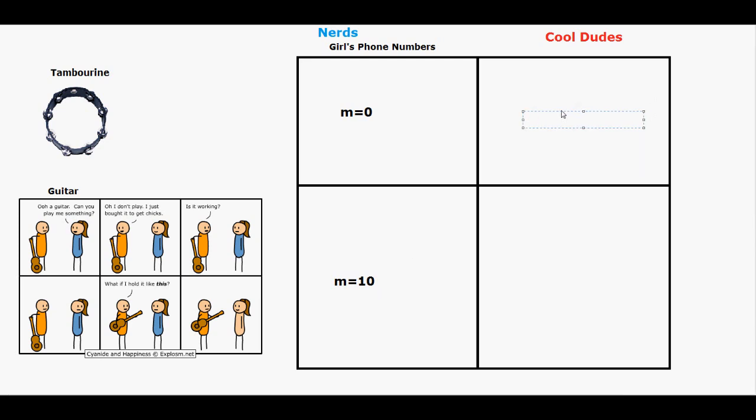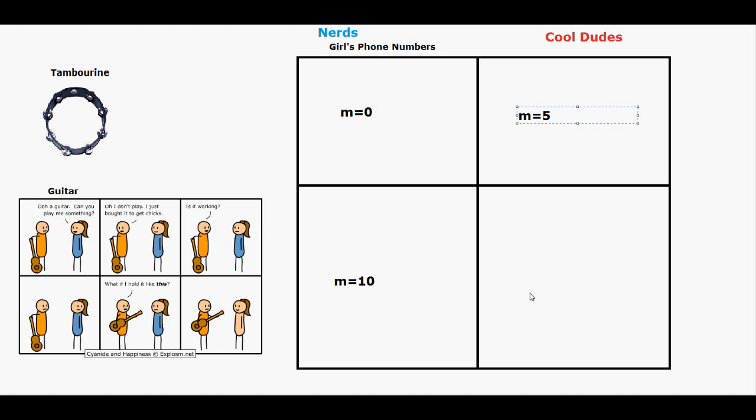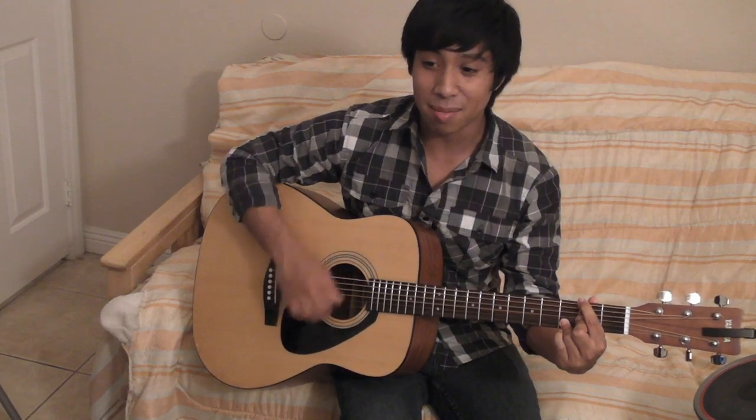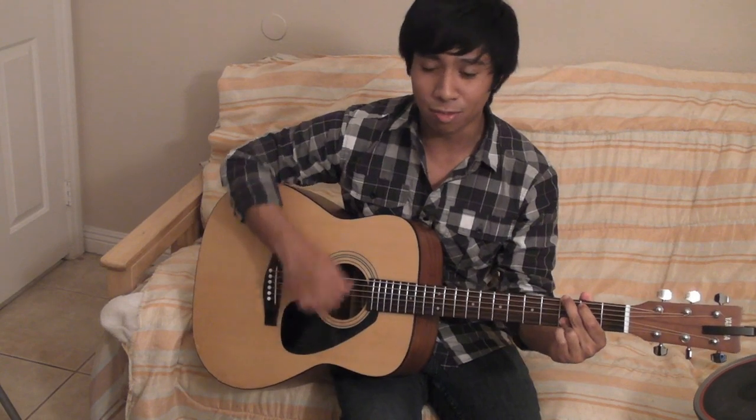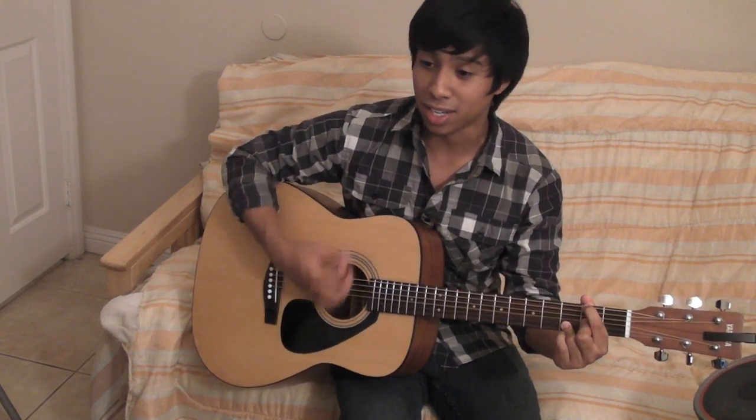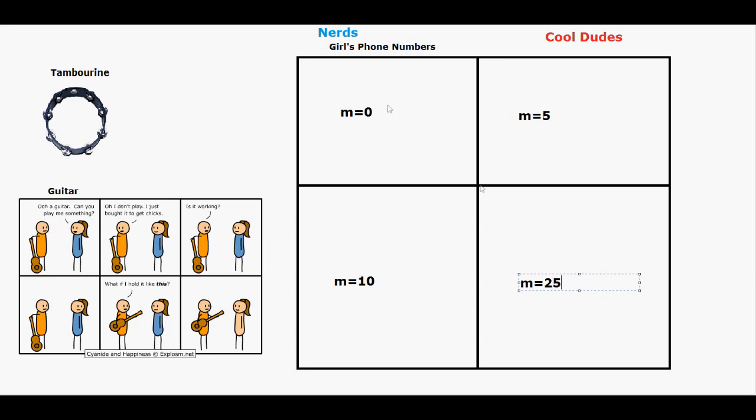What's next is we're going to have the cool dudes go and we'll check this out. So the cool dude plays the tambourine first and he surprisingly gets five girls numbers. He's pretty smooth and tambourine's not very cool. And then we'll have the cool dude play the guitar. Just give me your phone number, give me your phone number. And whoa, what's this? He happens to have 25 girls numbers.